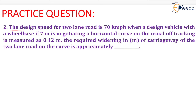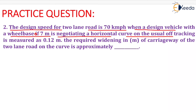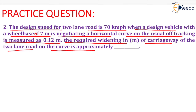The question is given as: the design speed for a two-lane road is 70 km per hour. A design vehicle with a wheelbase of 7 meters is negotiating a horizontal curve, and the usual off-tracking is measured as 0.12 meter. Find the value of mechanical widening and the required widening in meters of the carriageway of the two-lane road on the curve.